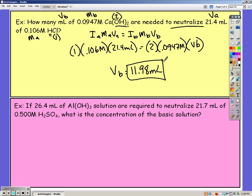Go ahead and pause the video and try the last one on your own. So on this one we had to find our concentration of base. We knew our volume of base. We gave off three hydroxide ions. We knew our volume of our acid, molarity of the acid, and our acid gives off two hydrogen ions.